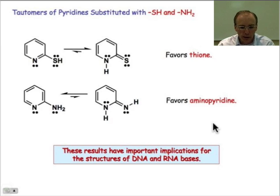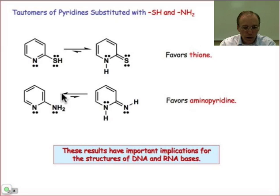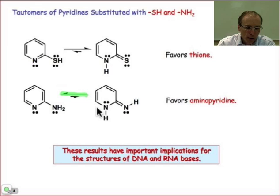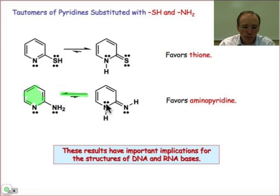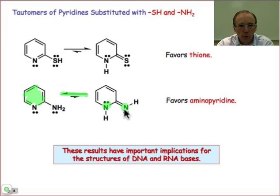So thione favors the tautomer shown on the right. What about the case of aminopyridine? Aminopyridine actually favors the tautomerization lying in the opposite direction. This ring's best resonance contributor is aromatic. And if we were to think about the resonance contributors, we would have one nitrogen that's going to be positively charged and one nitrogen that's going to be negatively charged — and that's true for both of these. So really, this charge argument about putting the positive and negative charges on the right atoms no longer applies in the case of aminopyridine.